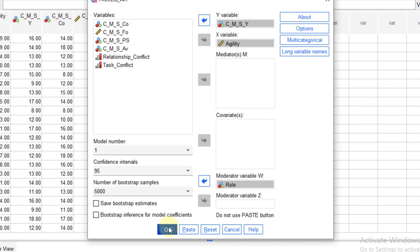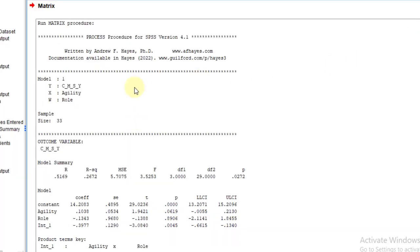So we will get our results in few seconds. We got the results. First of all, it's telling us that we have used model 1, Y, X, and W. These are the dependent, independent, and moderator variable.